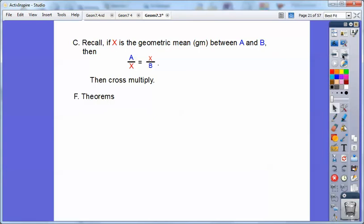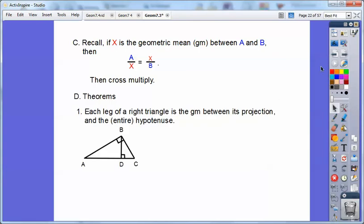So here's a couple of theorems about geometric means. Each leg of a right triangle is the geometric mean. So remember, you've got this right triangle. AB is a leg, and so is BC. It's also a leg. And they're both geometric means. So they go bottom left, top right. And they're geometric means between their projections and their whole hypotenuse.